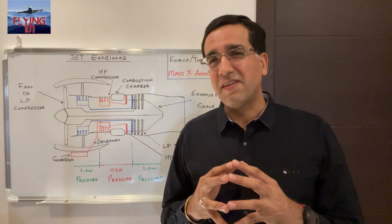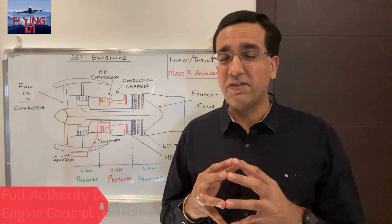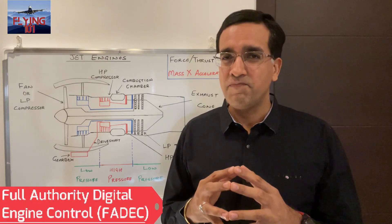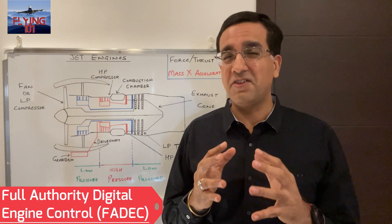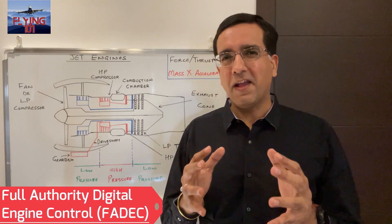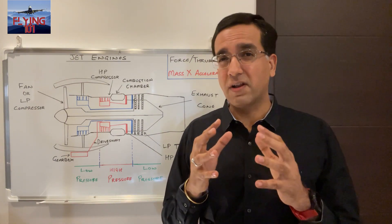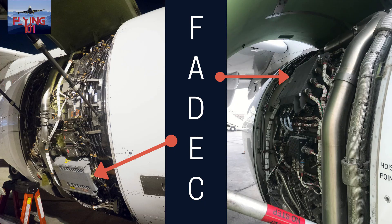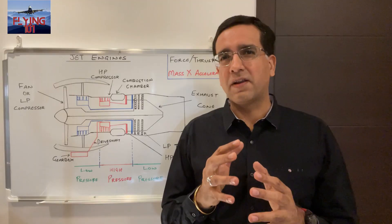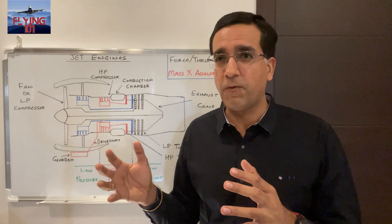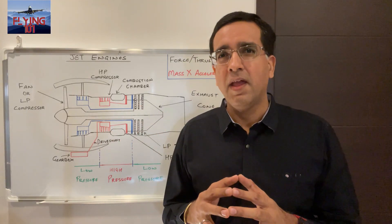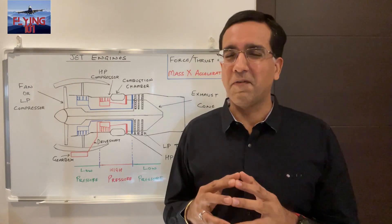Modern jet engines are controlled using something called FADEC, which stands for Full Authority Digital Engine Control. FADEC is a system that consists of a digital computer called an Electronic Engine Controller (EEC) or Engine Control Unit (ECU) and its related accessories that control all aspects of engine performance. These are highly sophisticated control devices.